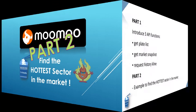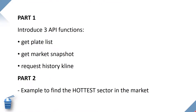In the last video, we went through three API functions: GetPlateList, GetMarketSnapshot, and RequestHistoryKline. In today's video, we're going to find the hottest sector in the market using Python and API.